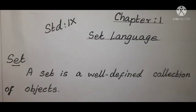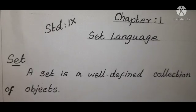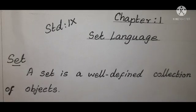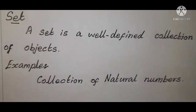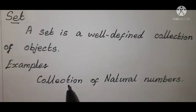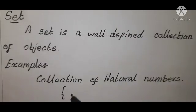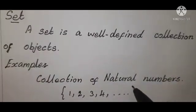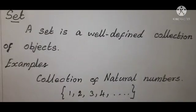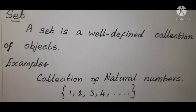The objects of a set are called members or elements. Inside a set, the objects are members. Objects are called members or elements. For example, the collection of natural numbers: 1, 2, 3, 4, etc. — 1, 2, 3 are elements of the set, or members of the set.